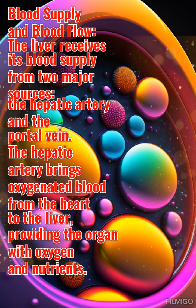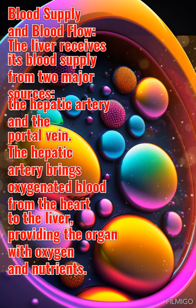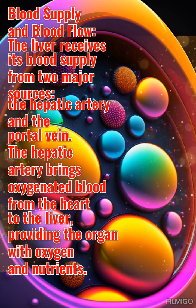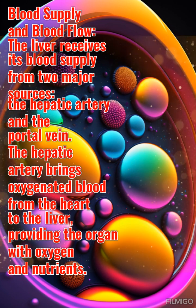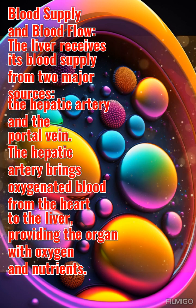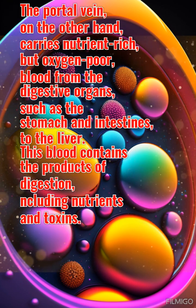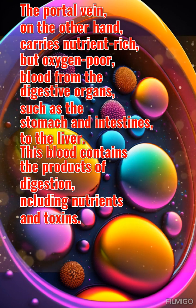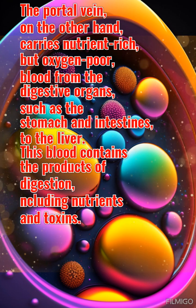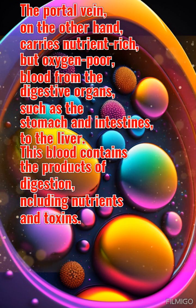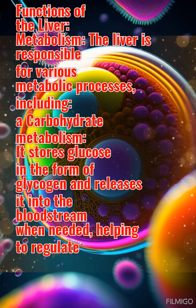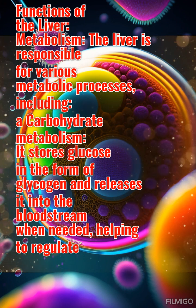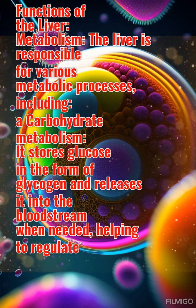Blood supply and blood flow: The liver receives its blood supply from two major sources — the hepatic artery and the portal vein. The hepatic artery brings oxygenated blood from the heart to the liver, providing the organ with oxygen and nutrients. The portal vein carries nutrient-rich but oxygen-poor blood from the digestive organs, such as the stomach and intestines, to the liver. This blood contains the products of digestion, including nutrients and toxins.